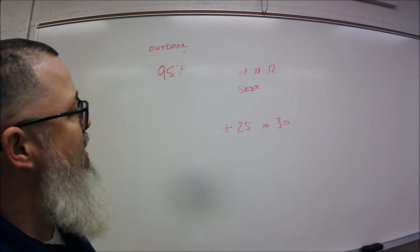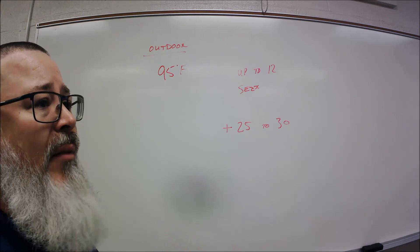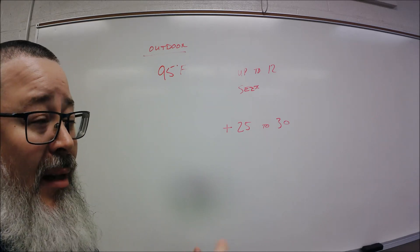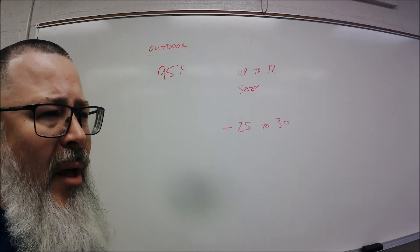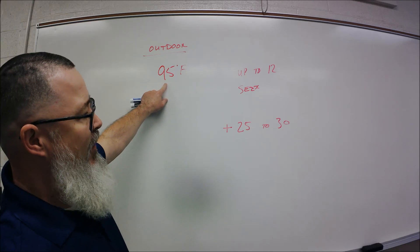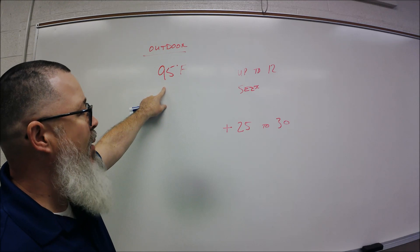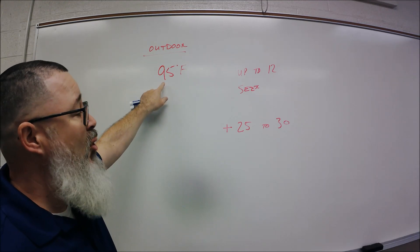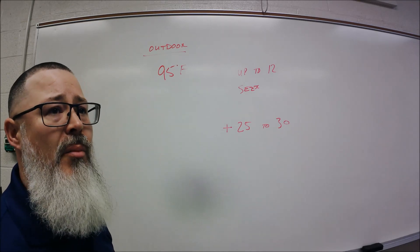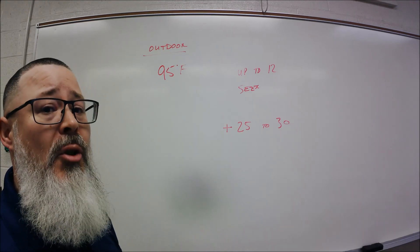So if it's 95 degrees and I have a 10 or 12 SEER unit, I'm going to add 25 to 30 degrees above that ambient. I like to work with a range so I'm not nailed down looking for one number. If I add 25 to 30 degrees, my condenser saturation temperature should be somewhere between 120 and 125 degrees. That's the saturation point on my condenser.